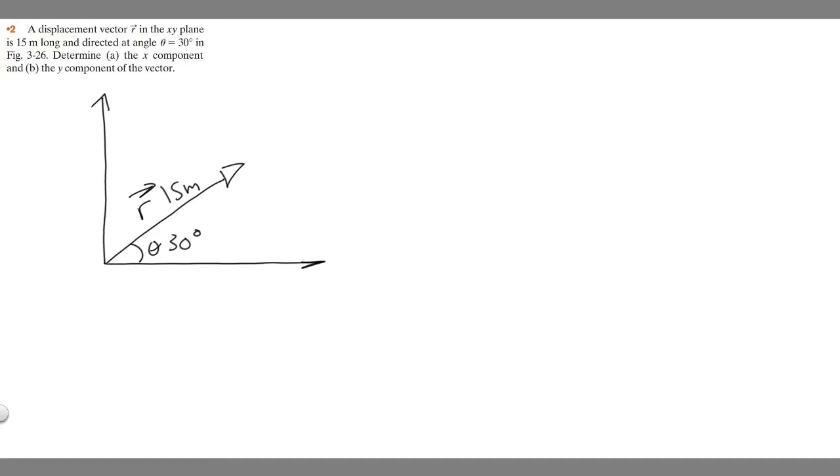In this problem, we're told a displacement vector r in the xy plane is 15 meters long and directed at an angle theta, which equals 30 degrees. We're told to determine the x component and the y component of the vector.